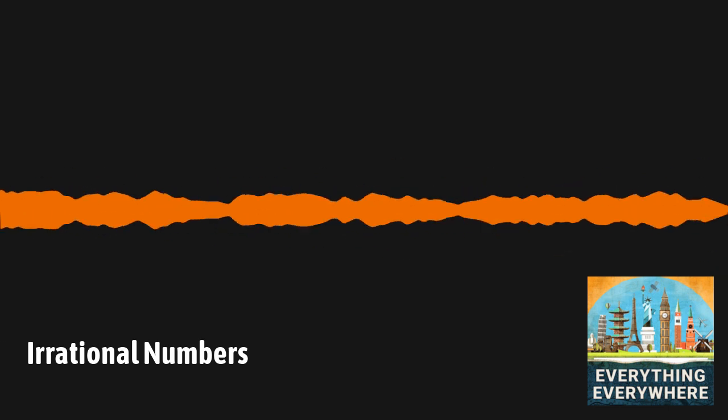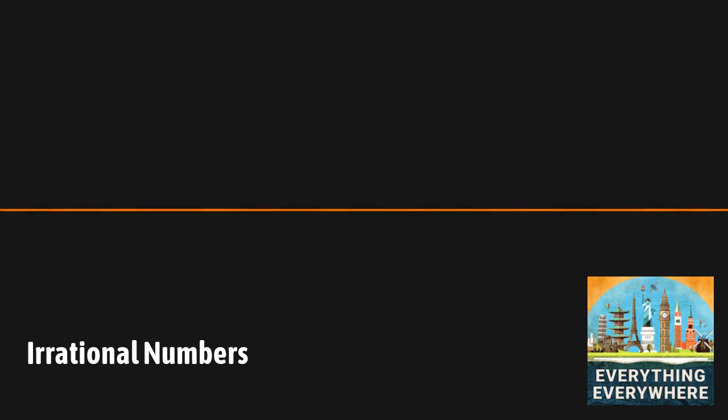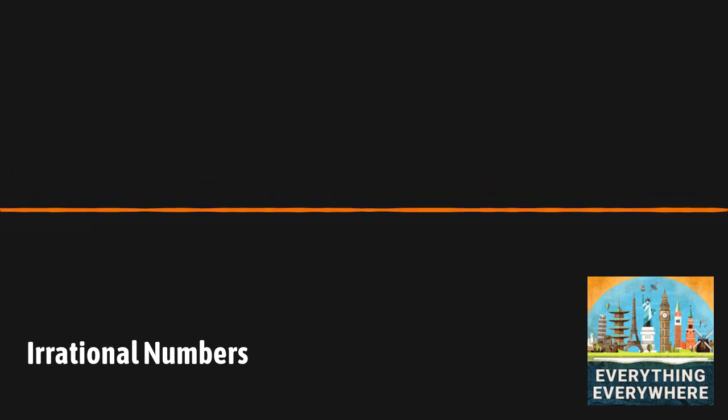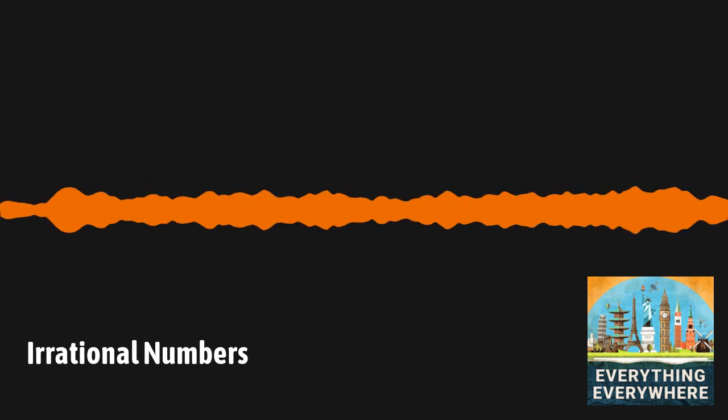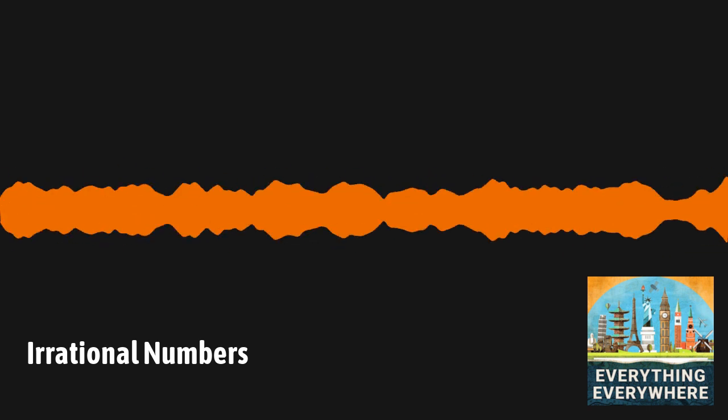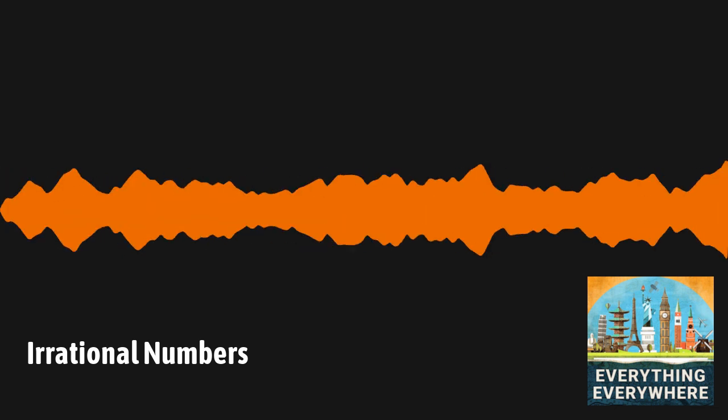Simply being an infinitely long string of decimals isn't enough to be considered irrational. Consider, 7 divided by 11 is 0.36363636 repeating. In fact, any infinitely long decimal that repeats itself has to be a rational number expressed as some fraction.